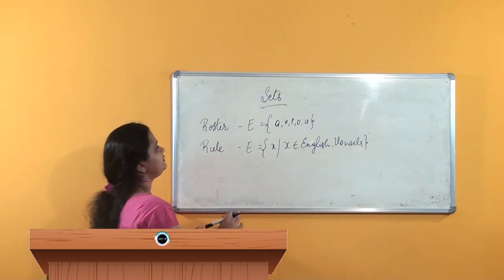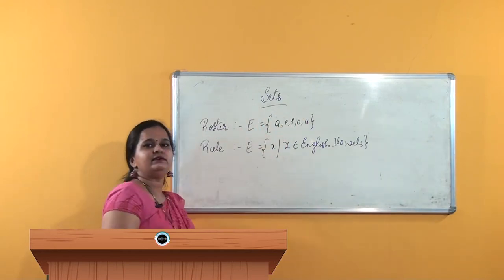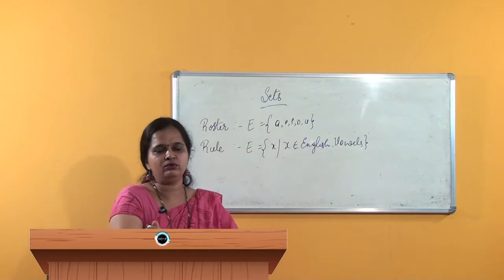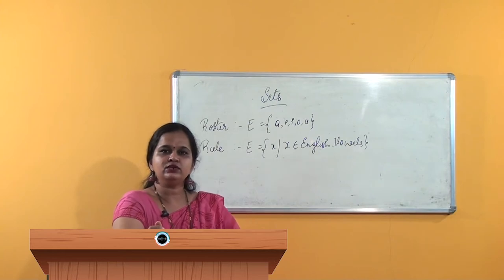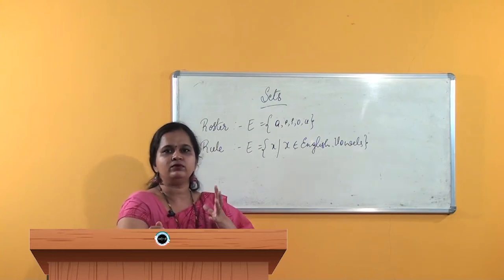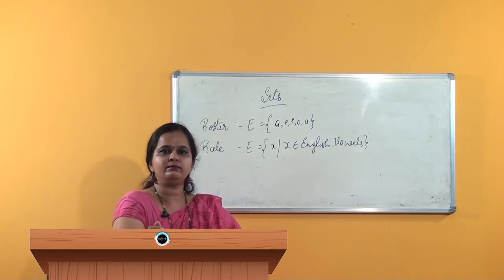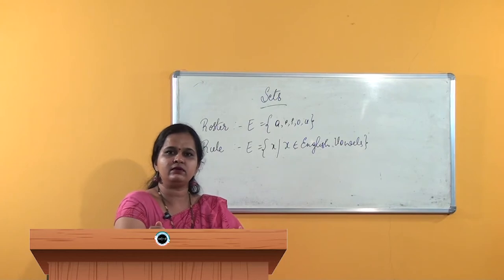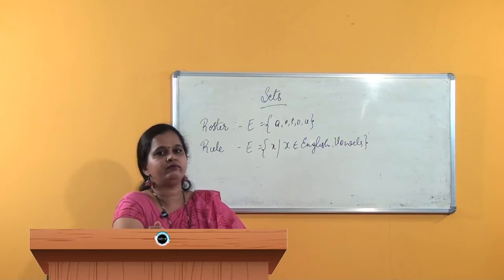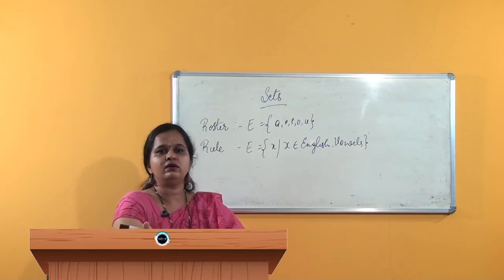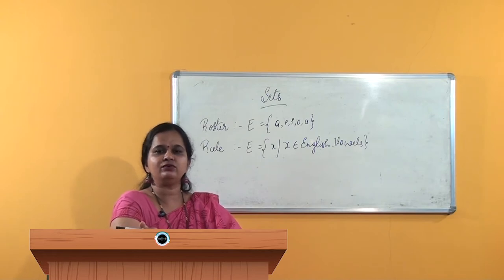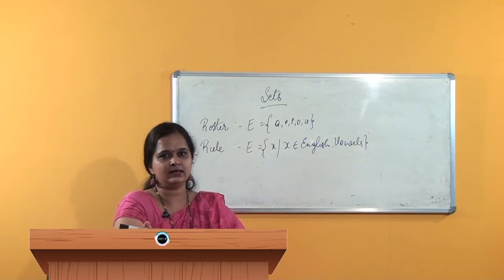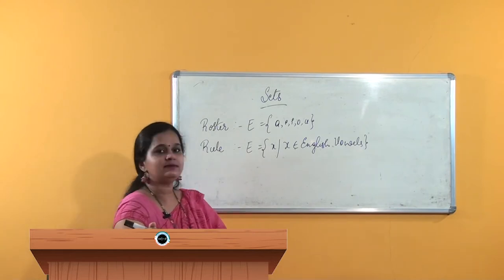A set is nothing but a collection of elements — we all know that. It is a collection of elements, and in the sense that it should be of some category. It should be of a particular kind — maybe it is a group of birds, group of pens, or a group of all the accessories that you use. Like this, it should be of some category, and while representing a set.